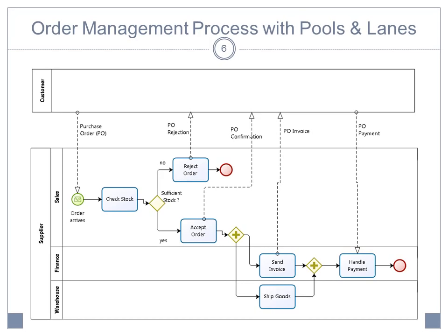So we see that the supplier process will start when it receives a message from the customer with a purchase order. And then you see the messages going back to the customer with either the rejection or the confirmation, the invoice, and then the message from the customer to the supplier with the payments.